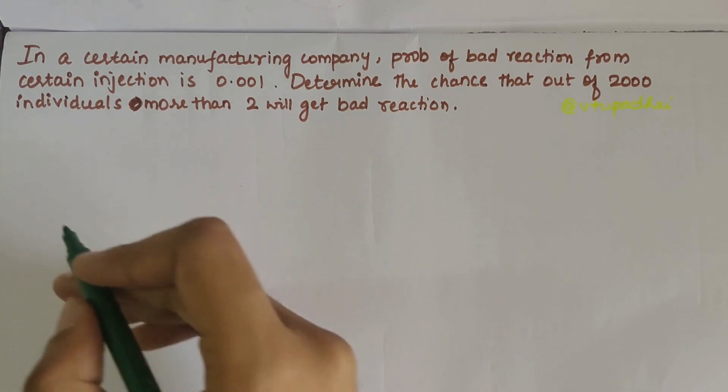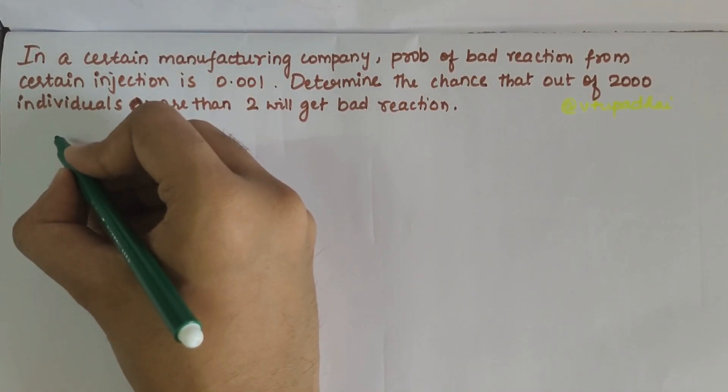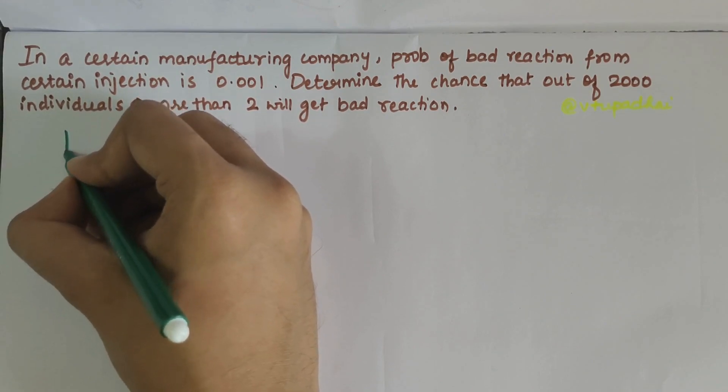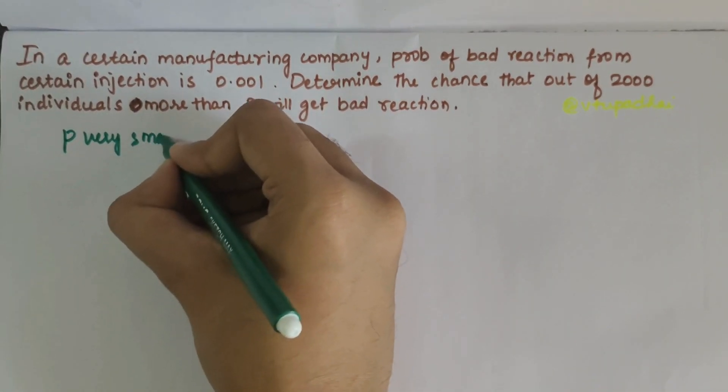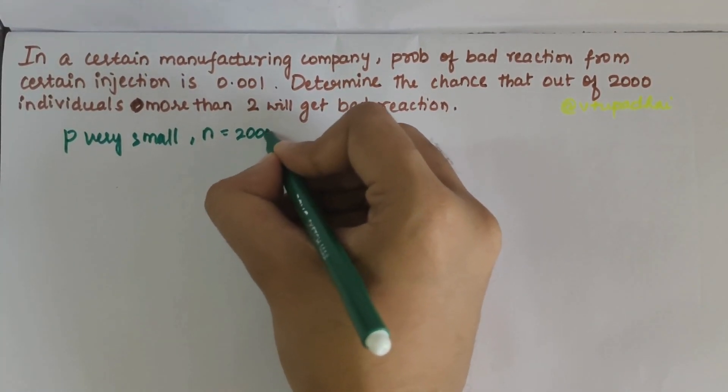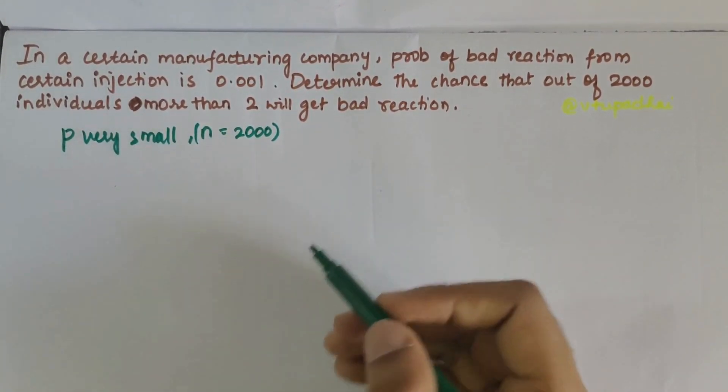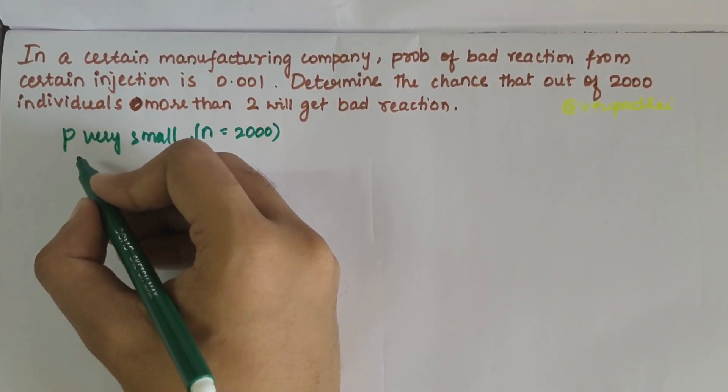As the probability of occurrence of a bad reaction is very small (the p value is very small compared to n = 2000), this will follow Poisson distribution.